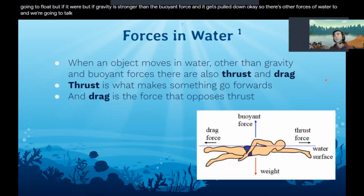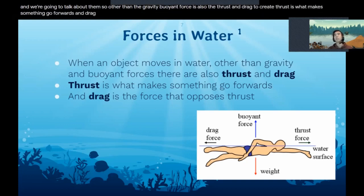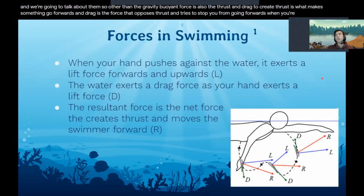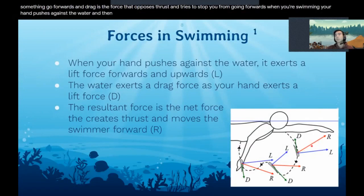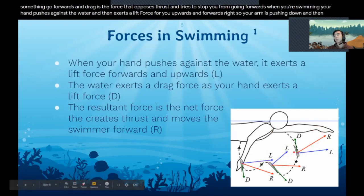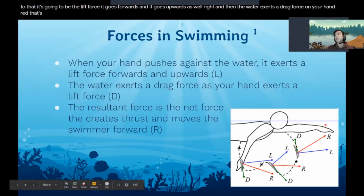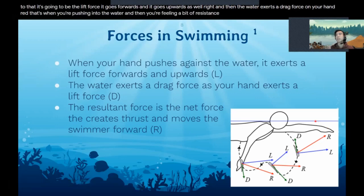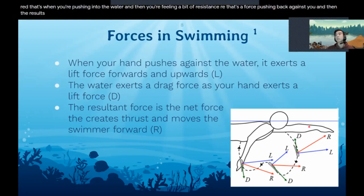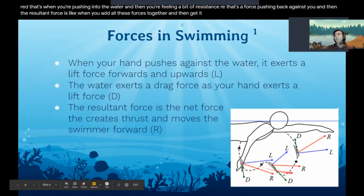There's other forces in water too. Other than the gravity pulling force is also the thrust and drag. Thrust is what makes something go forwards and drag is the force that opposes thrust and tries to stop you from going forwards. When you're swimming, your hand pushes against the water and then exerts a lift force for you upwards and forwards. So your arm is pushing down and opposed to that, it's going to be the lift force and it goes forwards and upwards as well. The water exerts a drag force on your hand - that's when you're pushing into the water and you're feeling a bit of resistance. The resultant force is when you add all these forces together, and you get a resultant force that moves the swimmer forward.